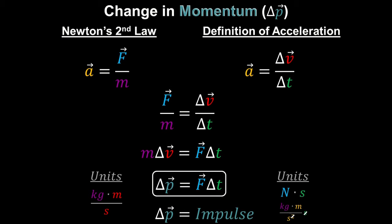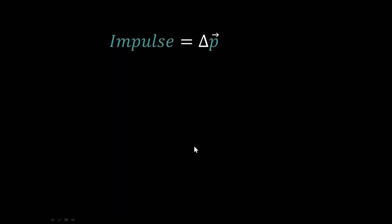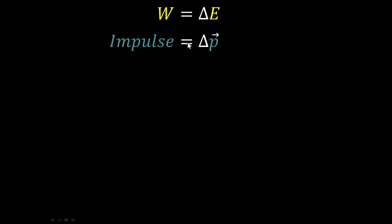Impulse equals the change in momentum — they are equal to each other, but they're not the same thing. Think of what we did with work and energy: work is not the same thing as energy, but if you do 100 joules of work you've used 100 joules of energy — same numerical value, different ideas. Similarly, impulse has the same value as the change in momentum but they are different ideas. Impulse is the cause; change in momentum is the effect.